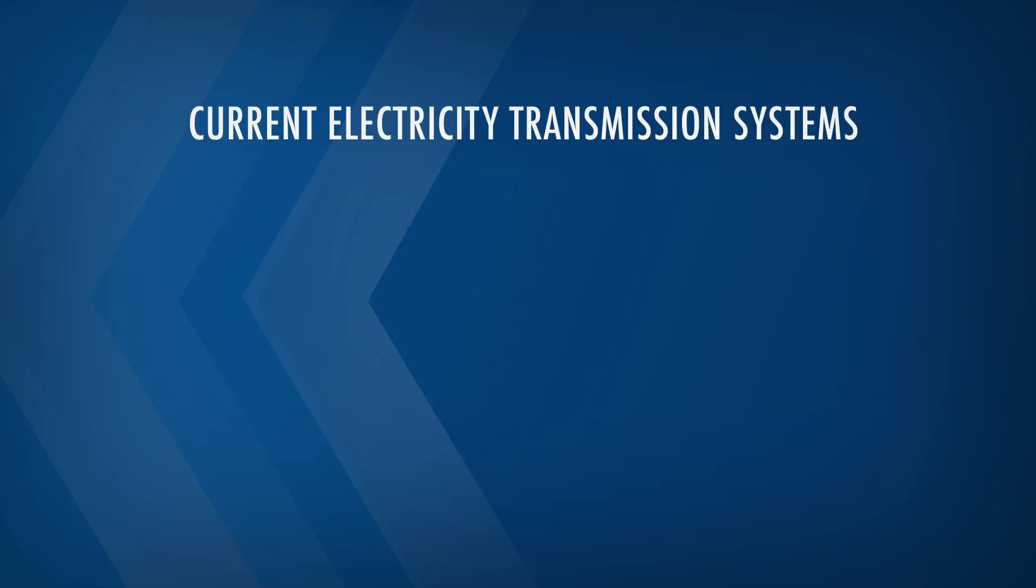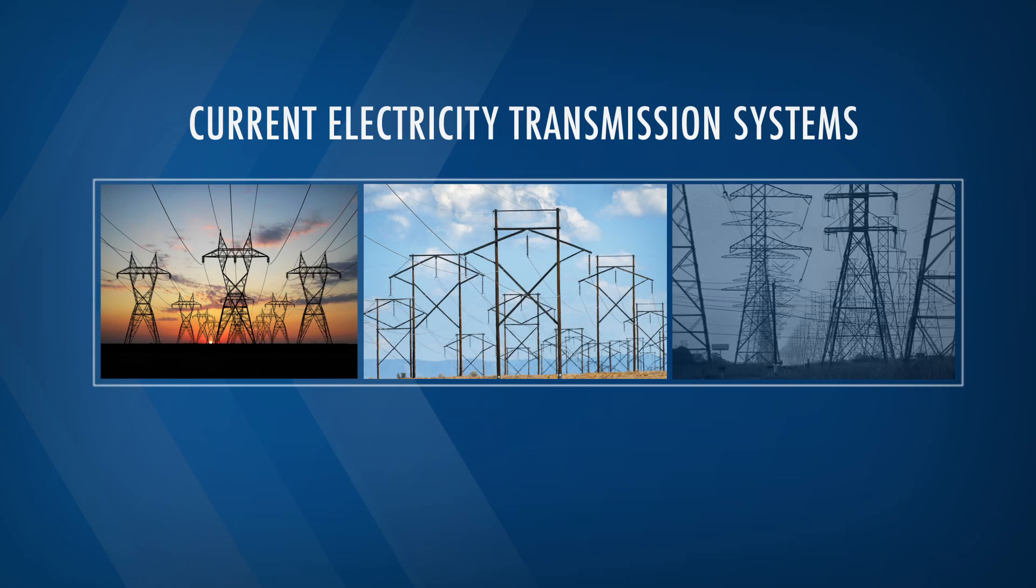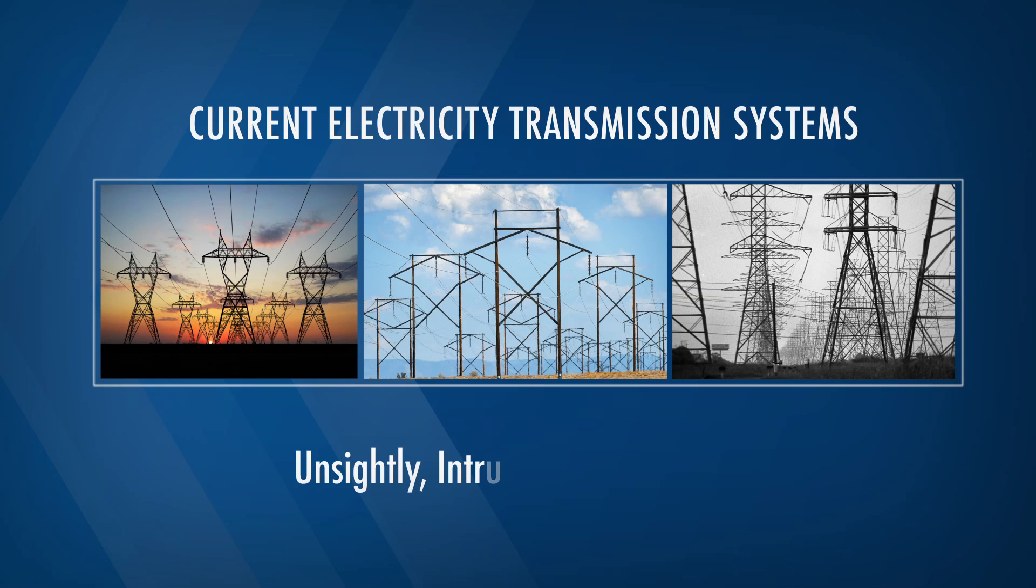Perhaps the most recognizable and certainly the most visible part of any electricity transmission system is the towers and wires that wind their way across the land.